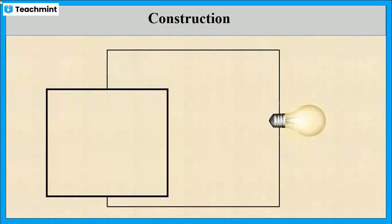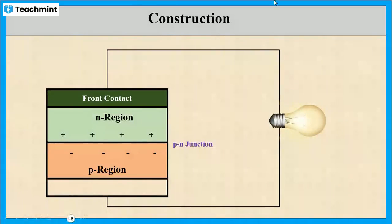Now let us see the construction of solar cells. This solar cell consists of a front contact which is made up of metallic grips. Below the front contact it contains a p-n junction of silicon in which the n-region is at the top. At the bottom of the p-n junction is the back contact which is made up of noble metal like silver.